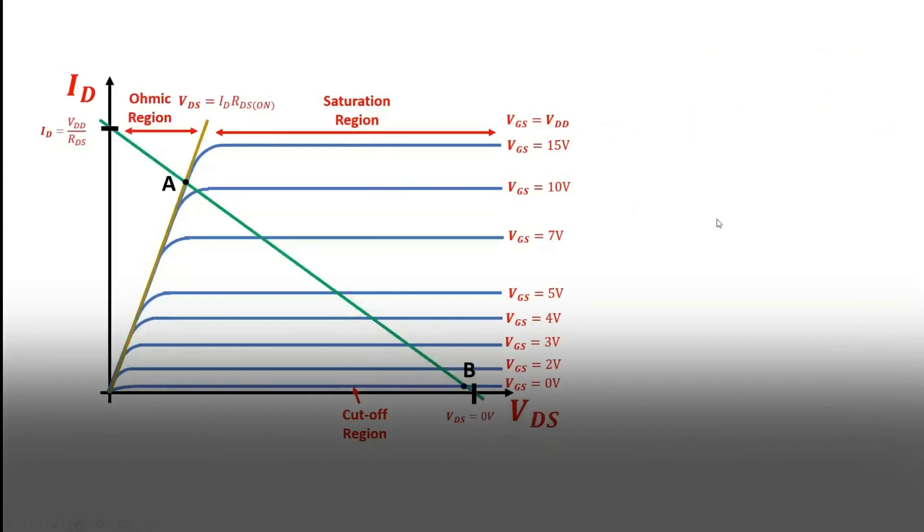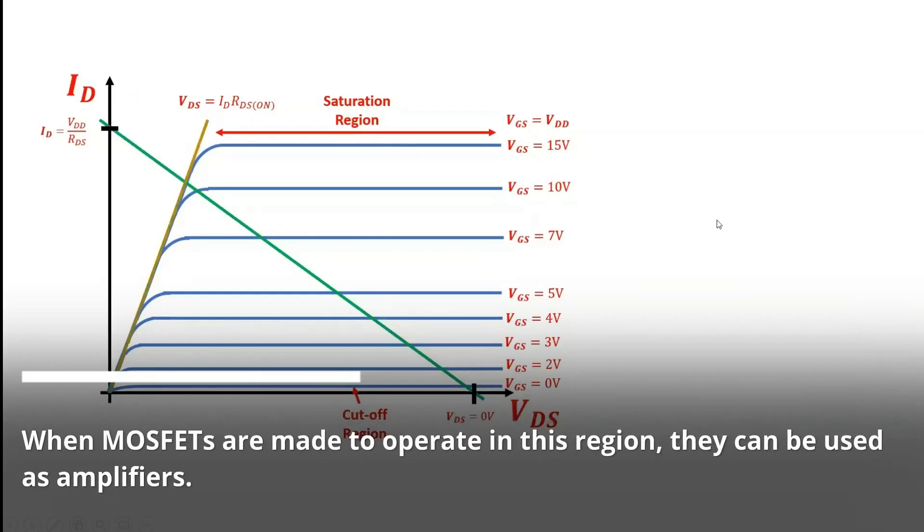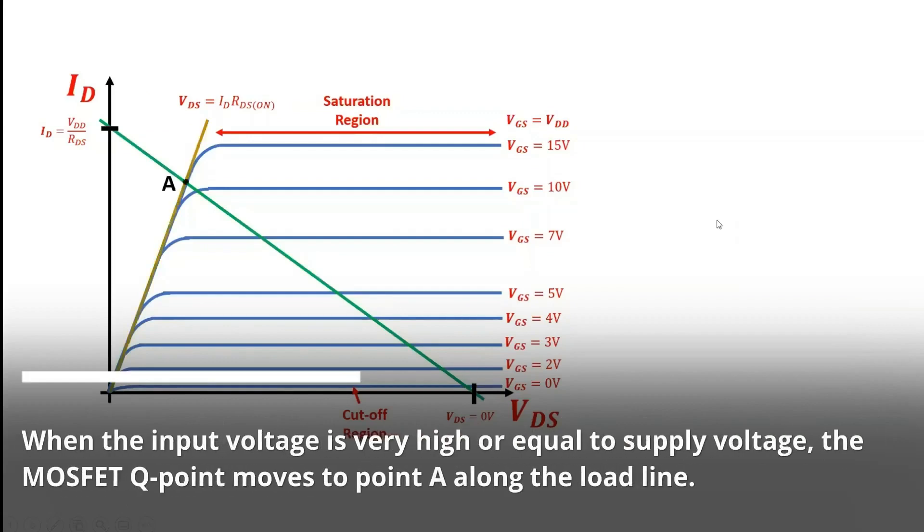The third region is called the ohmic or linear region where the drain current increases with an increase in the value of drain source voltage. When MOSFETs are made to operate in this region, they can be used as amplifiers. When the input voltage is very high or equal to supply voltage, the MOSFET cue point moves to point A along the load line.